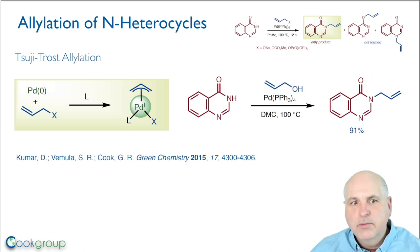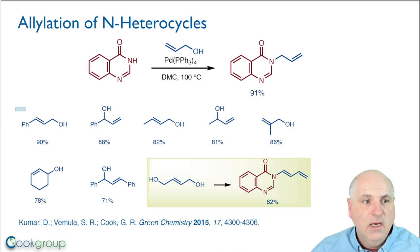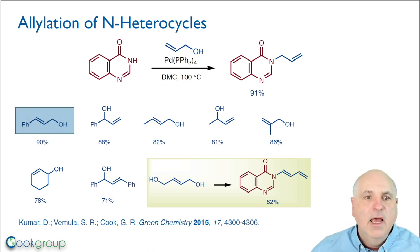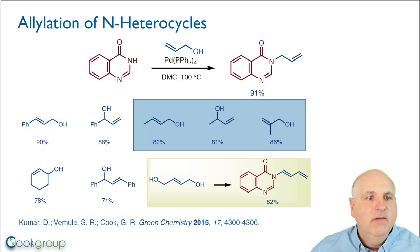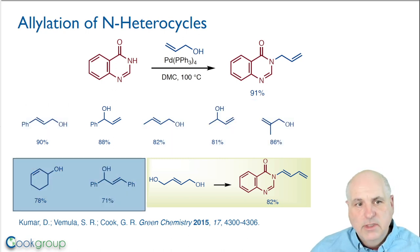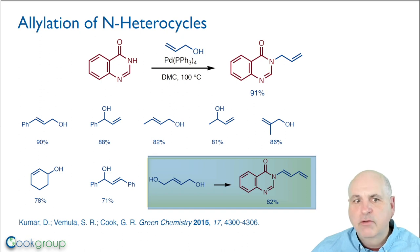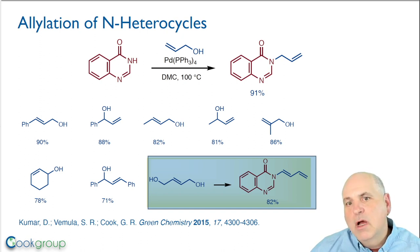The scope of this reaction is quite general with regard to the types of allyl alcohols you can use. We can use conjugated aromatic allyl alcohols in very high yield, as well as aliphatic alcohols, even secondary alcohols. Interestingly, when we use butenediol, that reaction resulted in the formation of a dienamide after elimination of one of the alcohols, which could also be a very useful process.